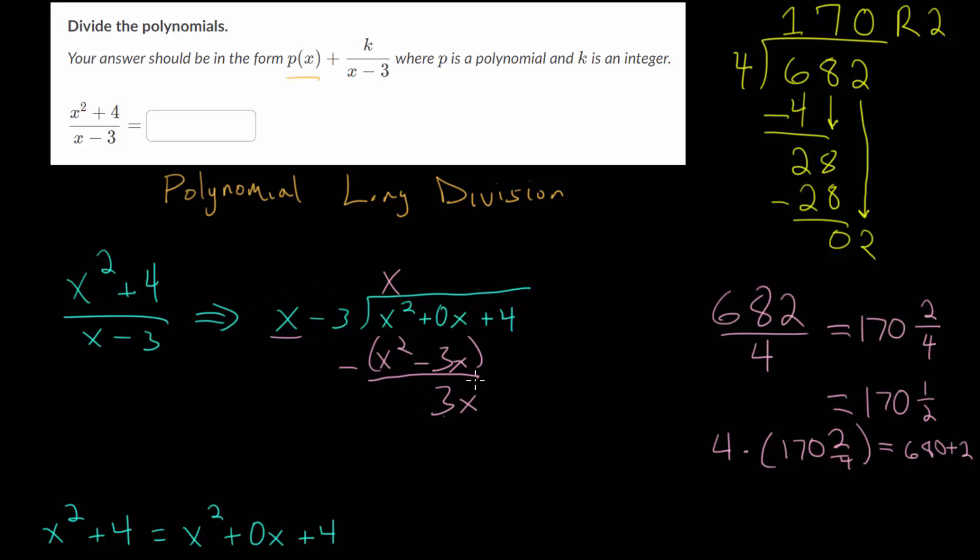Once we find the remainder, we repeat the process. Now we ask, what would we multiply x by to get 3x? We would multiply by positive 3. We're going to multiply to find our remainder. So 3 times x is 3x. Oh, and I forgot to bring down the 4. Always remember, once you complete the process, bring down the next number. Then 3 times minus 3 is negative 9. Now we subtract to find the remainder. Put it in parentheses so you remember to distribute that negative.